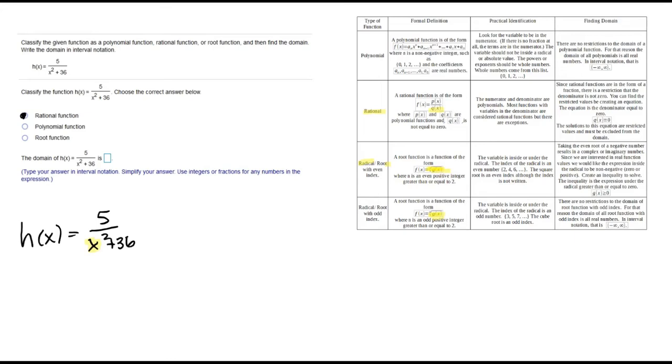Now with rational functions, we're worried about that denominator not equaling zero. So what we do is we take that denominator and set it equal to zero to figure out any restrictions.